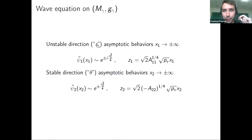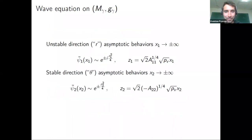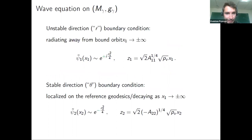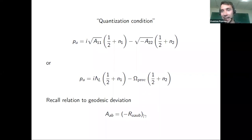Question about isometries: I'll come back to this shortly. The picture so far: you're radiating away from the bound orbit in the unstable direction, you're localized on the reference null geodesic in the stable direction. Imposing these boundary conditions gives a quantization condition on one of the momenta. The square roots of the matrix A are related to the geodesic deviation equations, and translating back to Boyer-Lindquist time you recover the usual precessional frequency around the geodesic and the Lyapunov exponent — the usual geometric optics results.